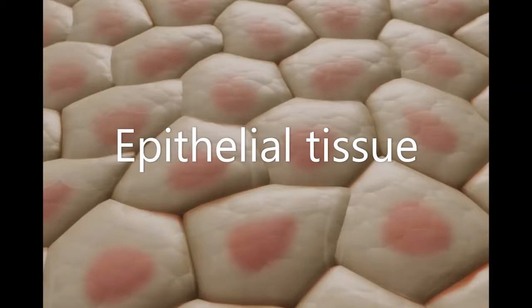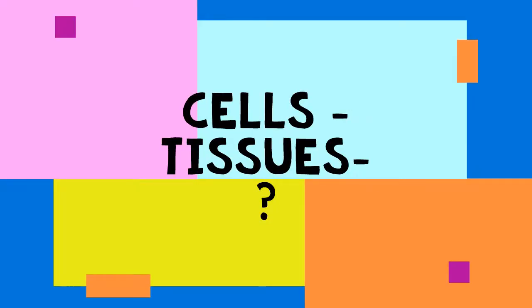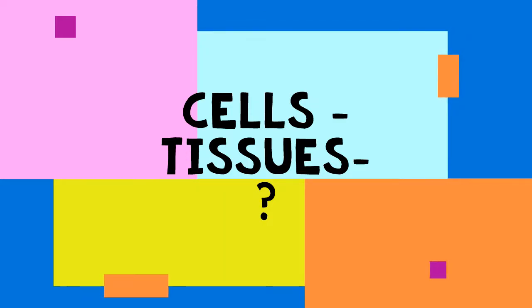Everything you do, from breathing to eating to running, requires lots of working cells. They are truly the building blocks of your body. Cells are organized into tissues, grouped by the similar job that they do.